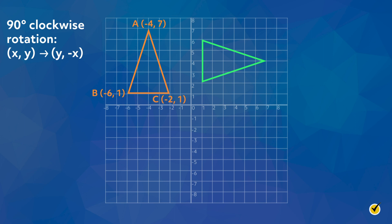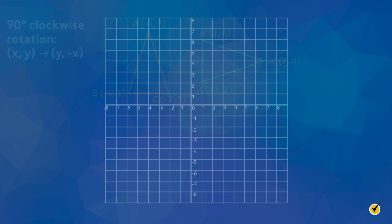So point A (-4, 7) becomes A' (7, 4). Point B (-6, 1) becomes B' (1, 6). And point C (-2, 1) becomes C' (1, 2). Let's take a look at another rotation.